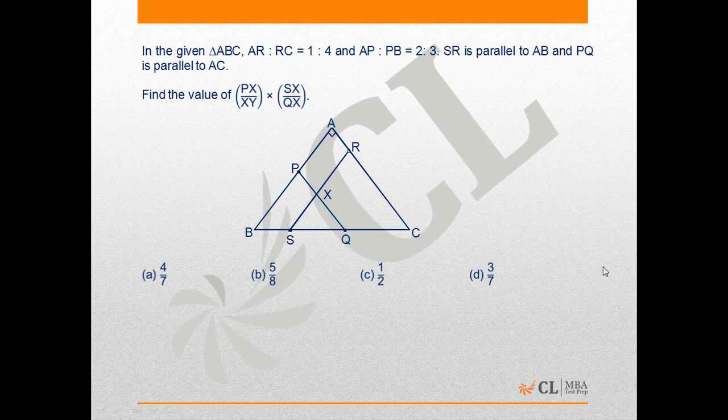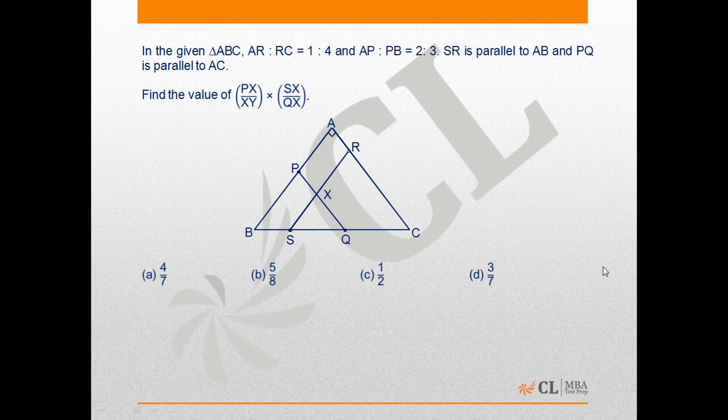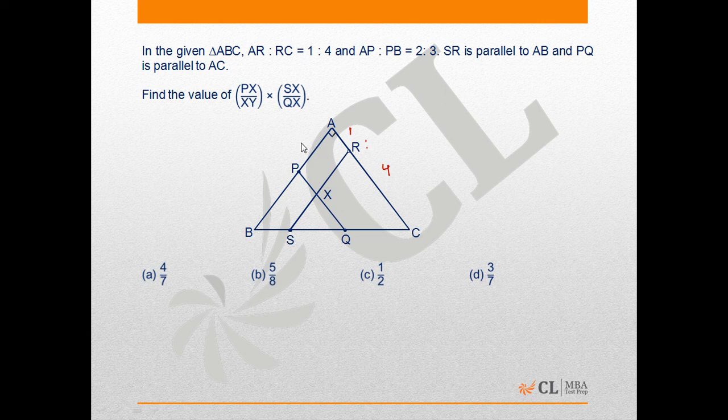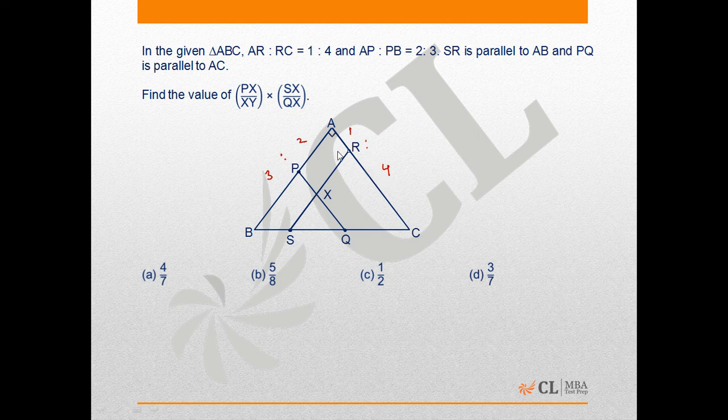You can put this question in round 1 as well as round 2. In this triangle ABC, AR to RC is 1 to 4, and AP to PB is 2 to 3. SR is parallel to AB and PQ is parallel to AC. We need to find the value of PX upon XY into SX upon QX.